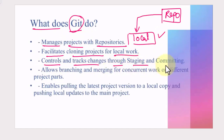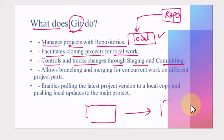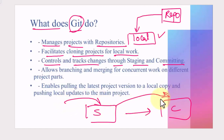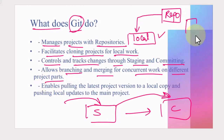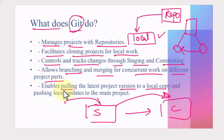Git controls and tracks changes through staging and committing. First a file goes through the staging area, and then it can be committed. Git also allows branching and merging for concurrent work on different parts of a project — we can create multiple branches and then merge those branches later on.